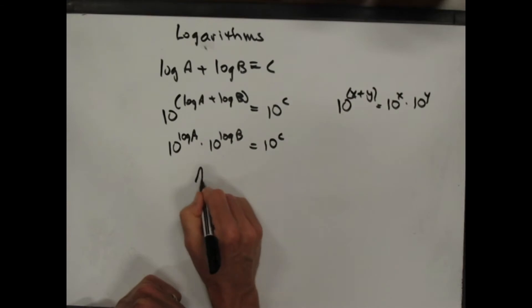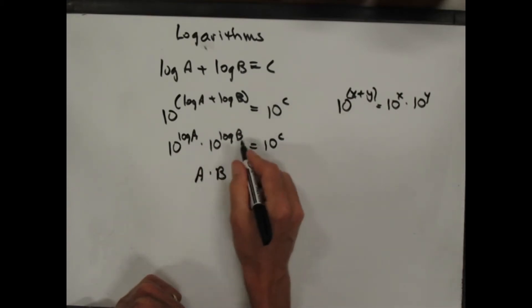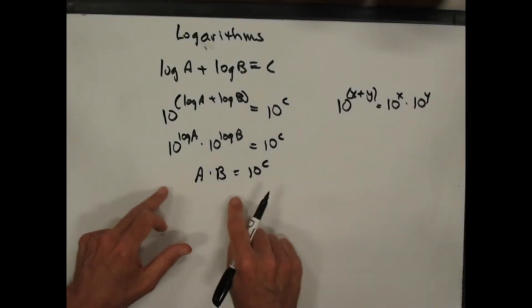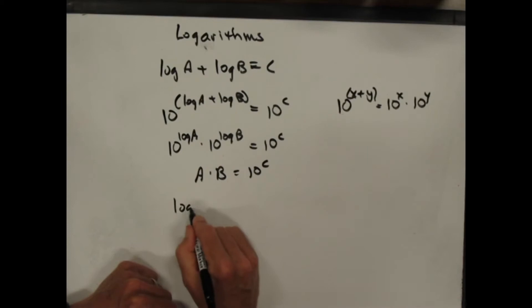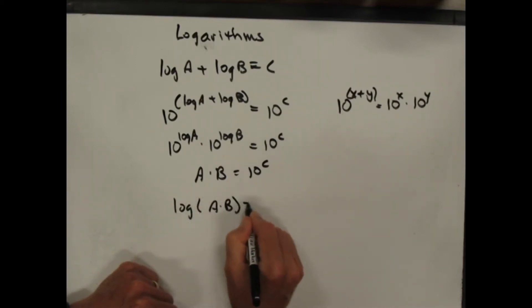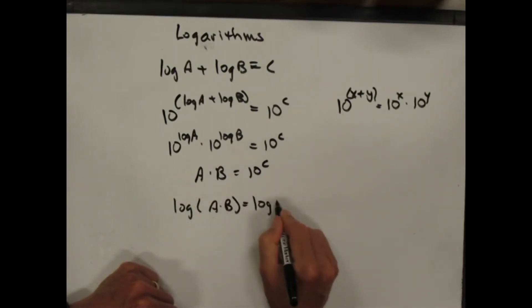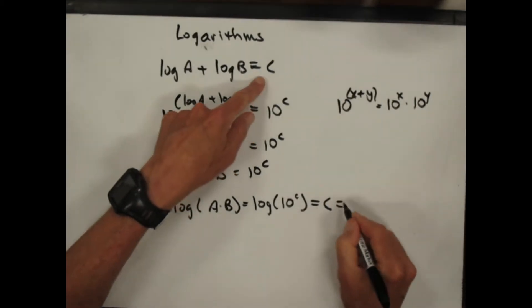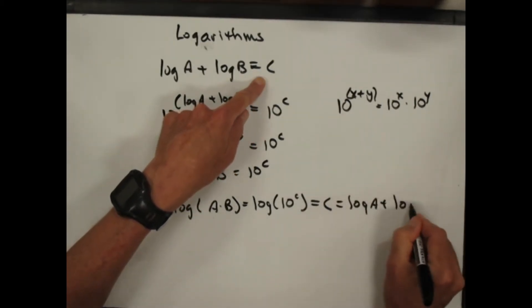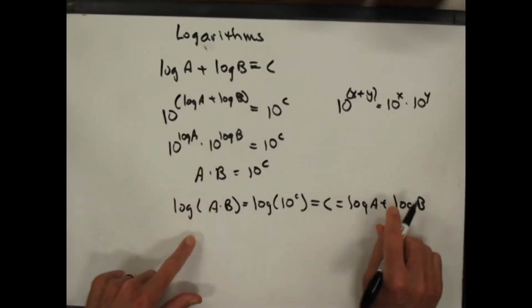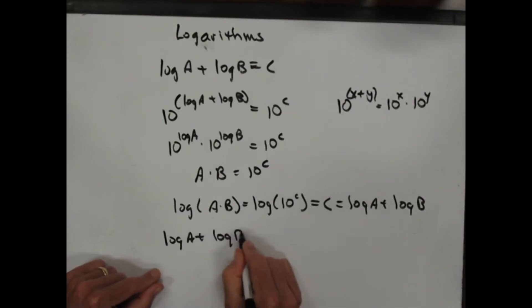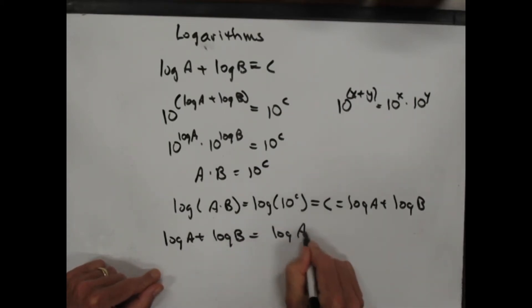But 10 to the log a is just a, and 10 to the log b is just b, so this is a times b equals 10 to the c. Now I can take the log of both sides: log of a times b equals log of 10 to the c, which is just c. But c is log a plus log b, because that's what I started with. And that means log of a plus log of b is equal to log of a times b.